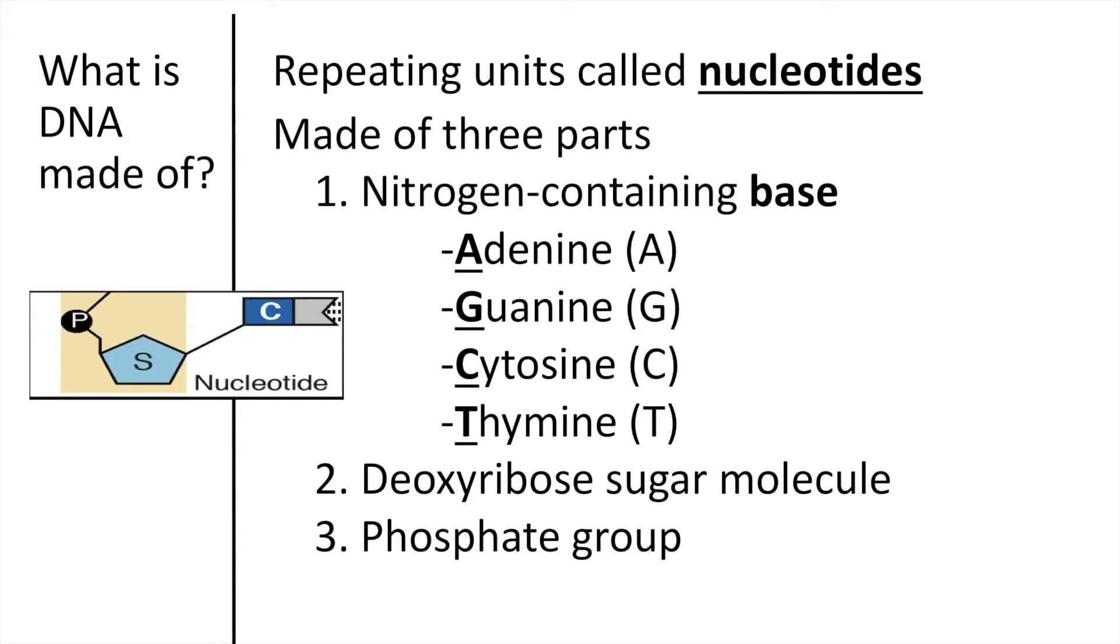Now to be more specific about what DNA is made of, it is simply a repeating pattern of units called nucleotides. There are three parts to each nucleotide. In order to have a nucleotide, you must have a nitrogen-containing base, and there are four different kinds that exist within the DNA.